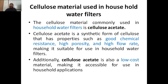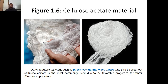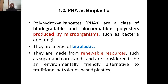Regarding cellulose materials used in household water filters, the most commonly used is cellulose acetate. Cellulose acetate is a synthetic form of cellulose with good chemical resistance, high porosity, and high flow rate, making it suitable for household water filters. It is also a low-cost material, making it accessible for household applications. Other cellulose materials such as paper, cotton, and wood fibers may also be used, but cellulose acetate is most common due to its favorable filtration properties.